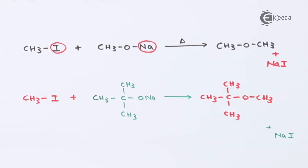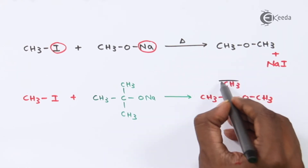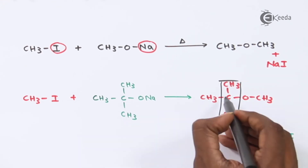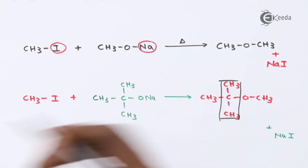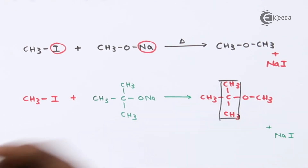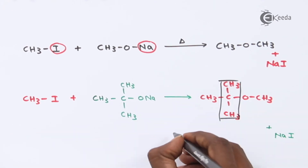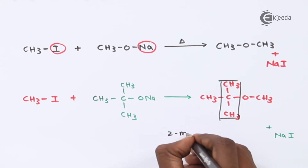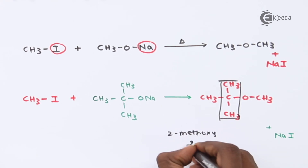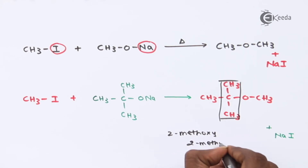This is how we can prepare a mixed ether. Naming the product: this is a straight chain where on the second carbon a methoxy group is attached, and on the second carbon there is also a methyl group. Therefore the name of this compound is 2-methoxy-2-methylpropane.